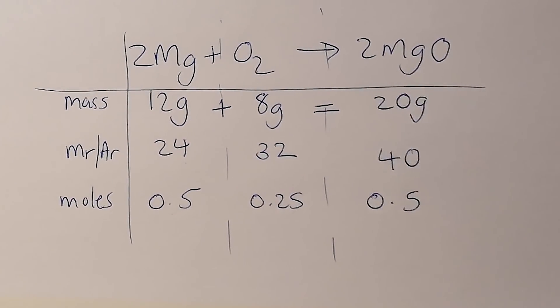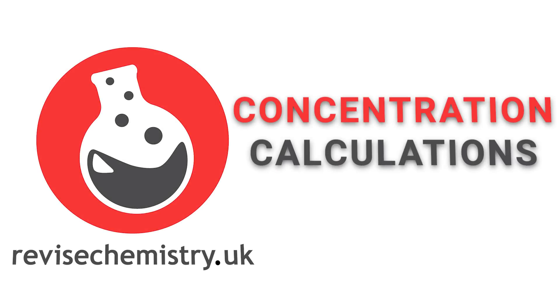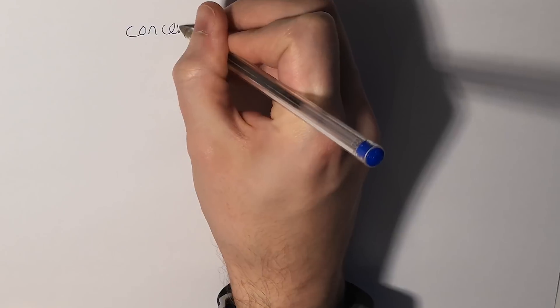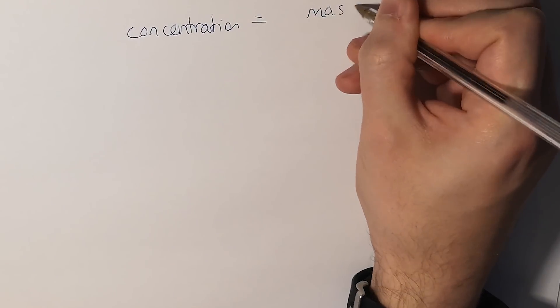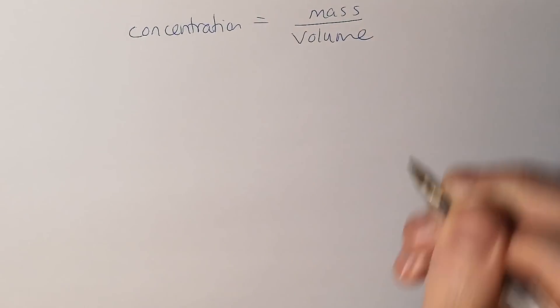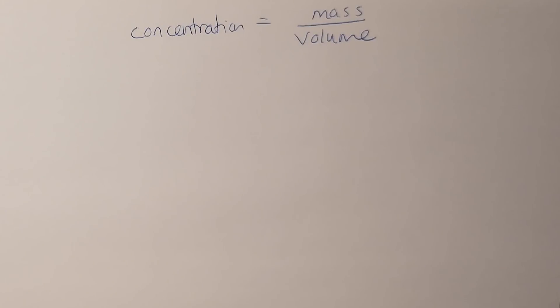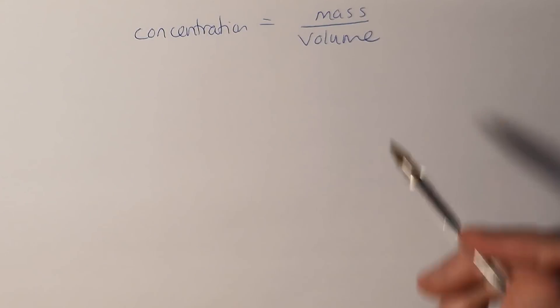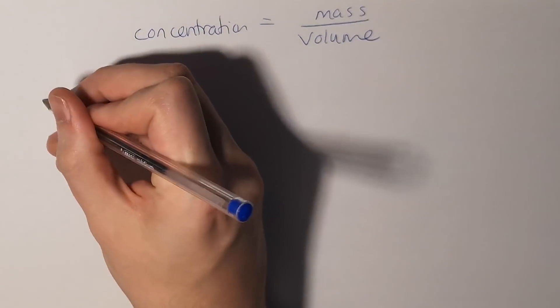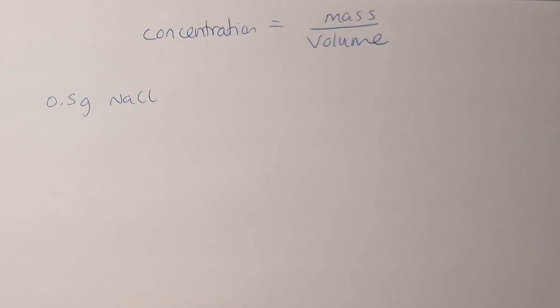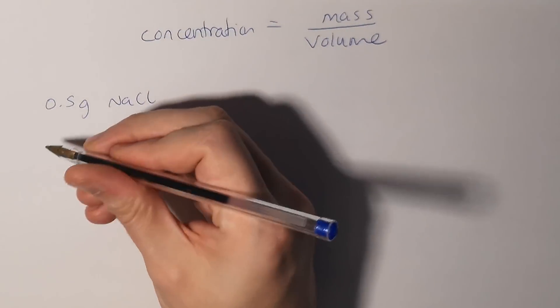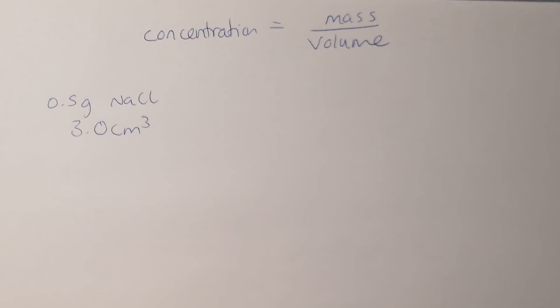The last thing we're going to look at in this video is concentration calculations. Concentration equals mass divided by volume. If you're going to do separate chemistry, you'll find that actually we can do concentration equals moles divided by volume. If I've got 0.5 grams of sodium chloride and I'm going to dissolve that in water, and the total volume of that solution ends up to be 3.0 centimeters cubed, what is the concentration of this solution?